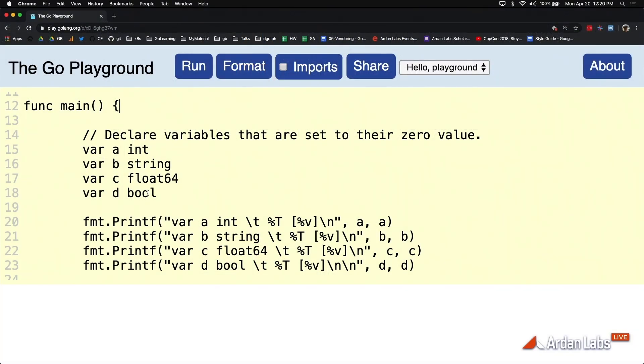Go has a keyword named var that you can use to declare variables. Here I'm declaring four variables using the keyword var. Go has a set of built-in types - int, string, float, bool - that I would expect you to be familiar with from other programming languages.